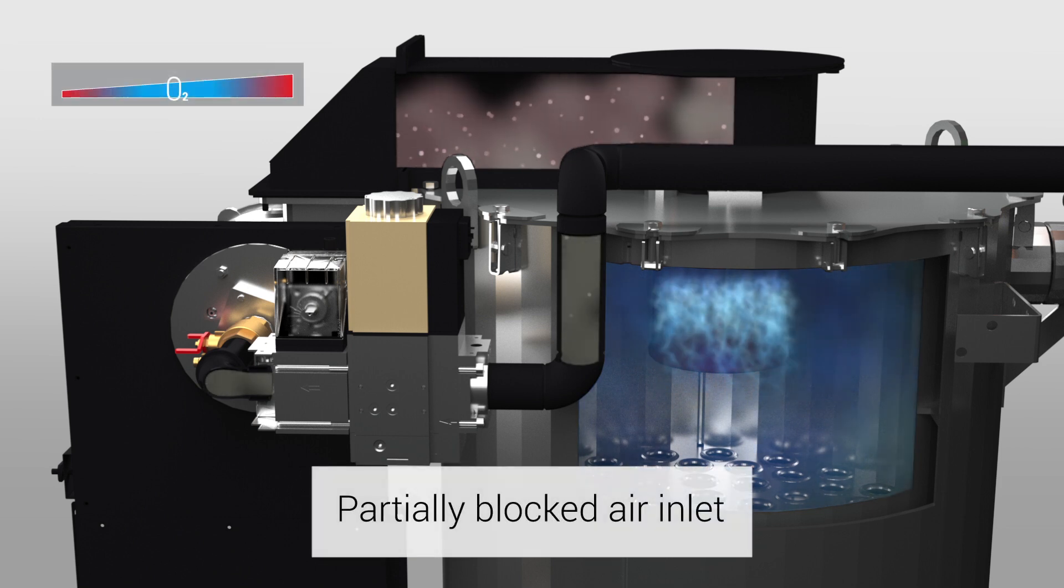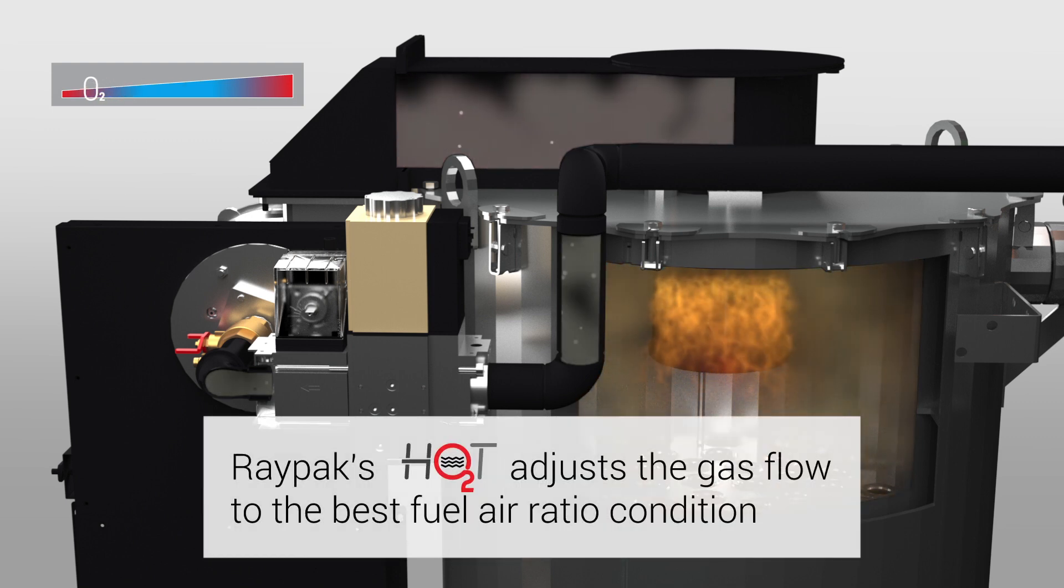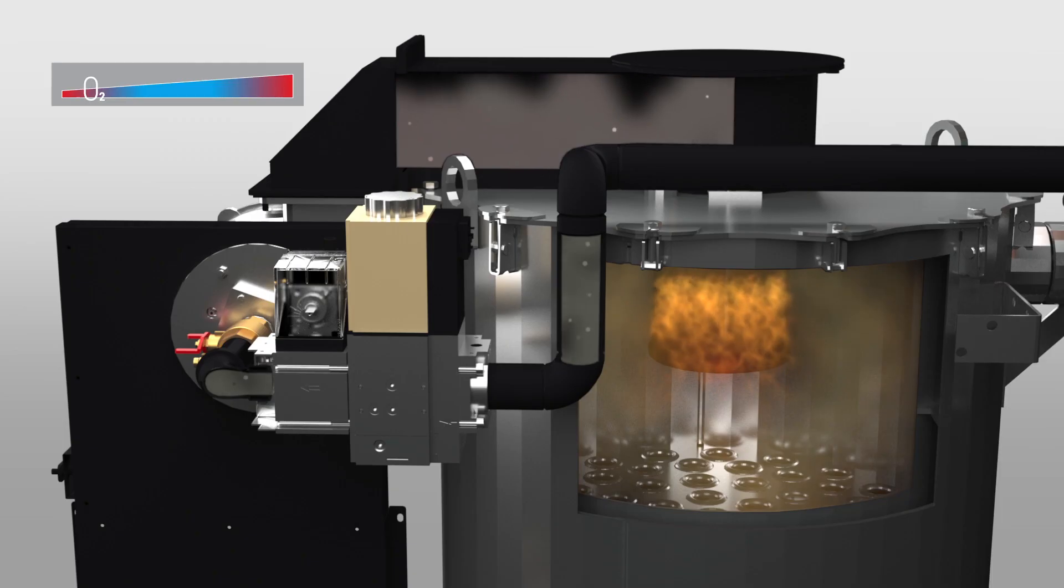A partially blocked air inlet. When inlet air blockage occurs, the available combustion air is reduced, resulting in lower oxygen measurements in the flue gas. The RayPak Hot System adjusts the gas flow to the best fuel air ratio.